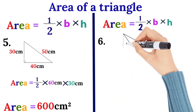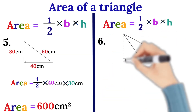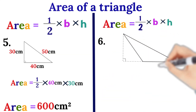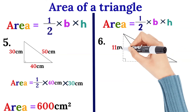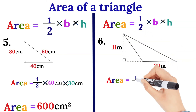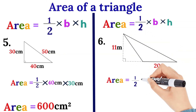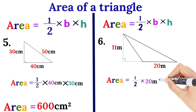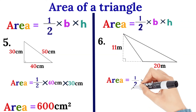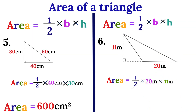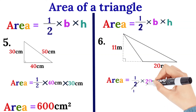Example number six. Half of 20 meters gives us 10. So 10 meters times 11 meters gives us 110 meters squared.